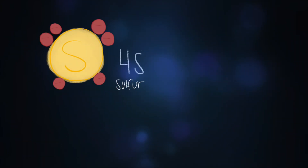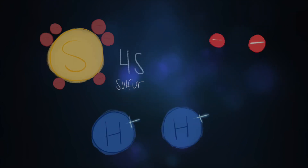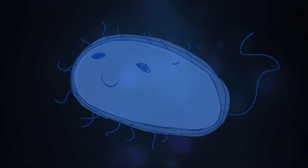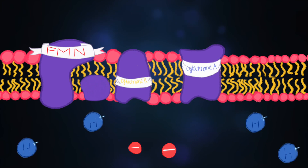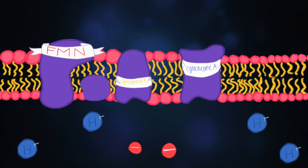As a result, we now have sulfur as a byproduct, hydrogen protons, and electrons all in the cell. These electrons soon make their way along the electron transport chain. Since bacteria are prokaryotes, their electron transport chain is located right in their cell membrane.